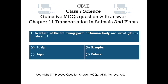Question number 4. In which of the following parts of the human body are sweat glands absent? Option A: Scalp. Option B: Armpits. Option C: Lips. Option D: Palms.